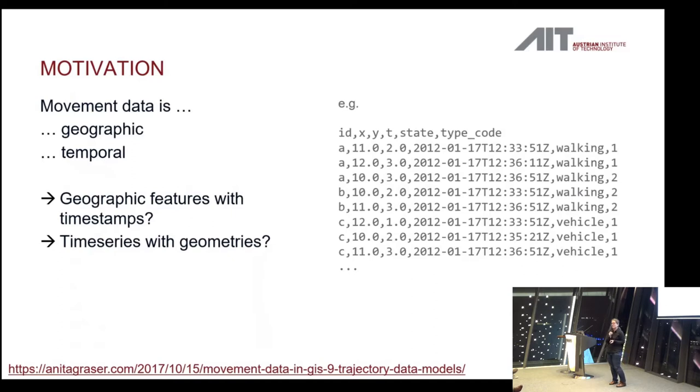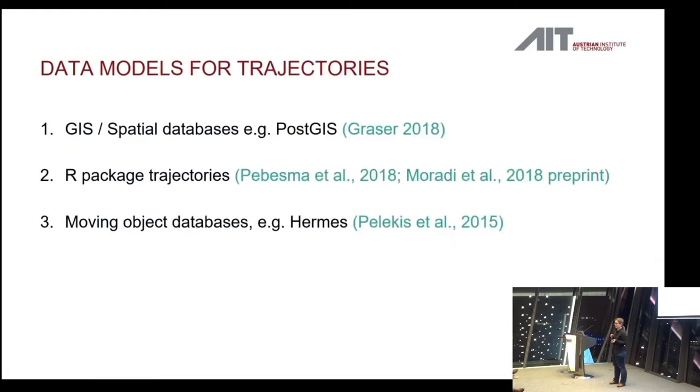The main question is, movement data, how do you model that? Of course, on the one hand side, it's geographic information, because movement has to happen somewhere. On the other side, it's temporal information, because movement happens in time. So, you can either model it as geographies with timestamps, or you can model it as time series that have a location attached. These are the two main approaches that you can follow. And on the right hand side, you can see a simple text file containing movement data. And really, you could put it in either one of these two data structures.